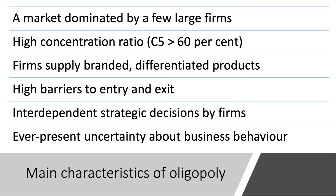Crucially, behavioural and strategic decisions by firms are interdependent. You have to think about the likely reaction of your rivals to a change in price, advertising, or investment spending. This means there is ever-present uncertainty about actual business behaviour in an oligopoly.